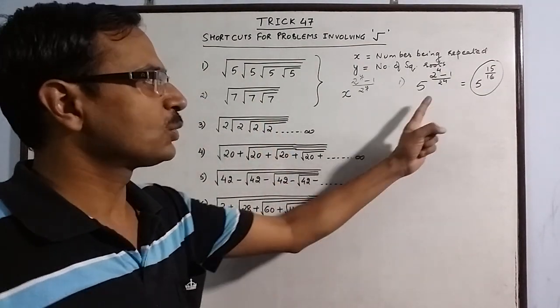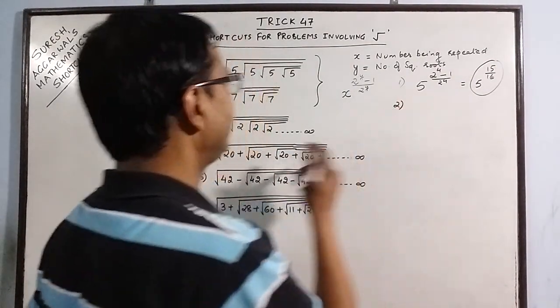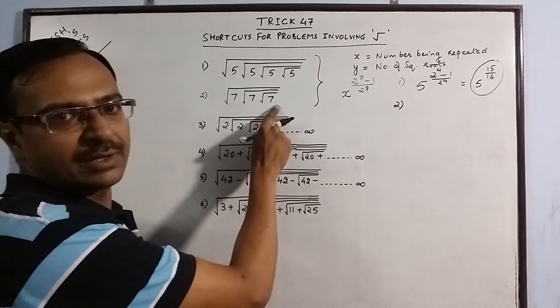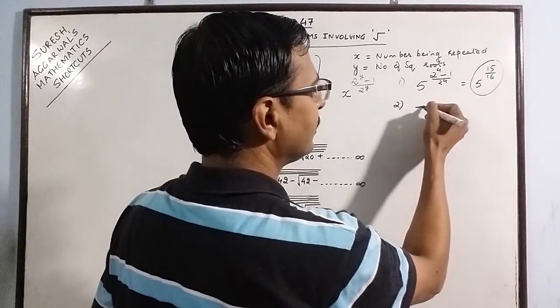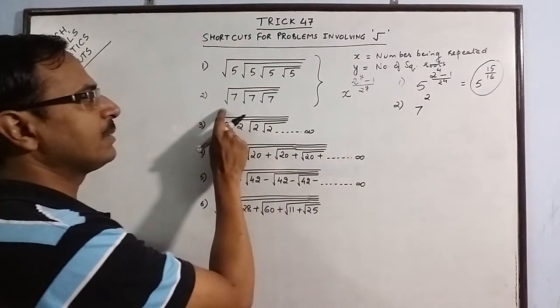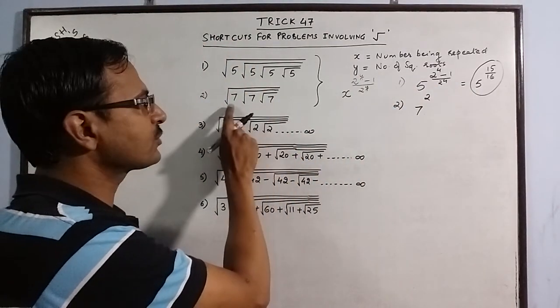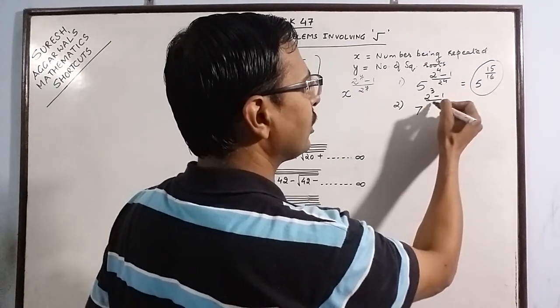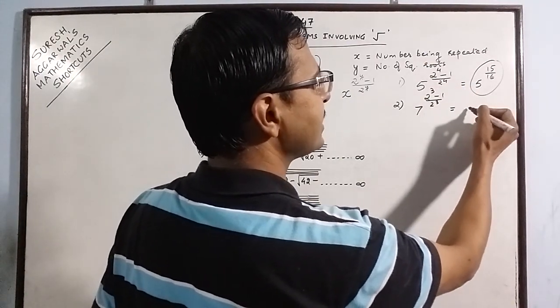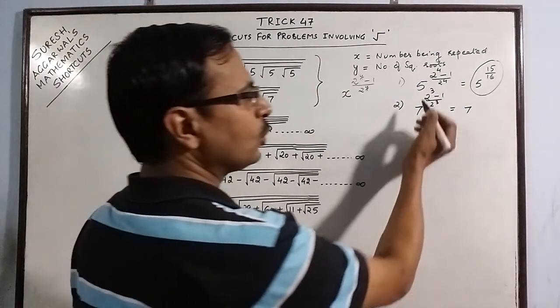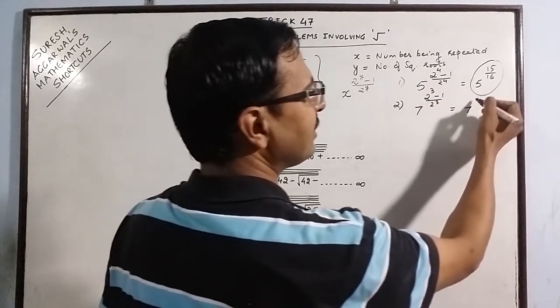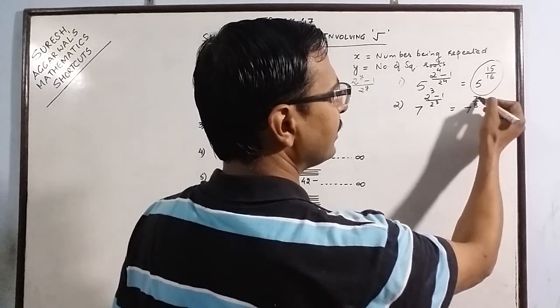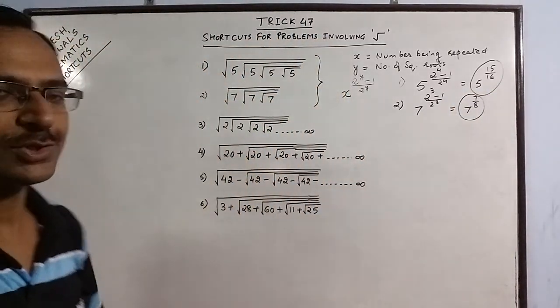Similarly, you can apply this rule for the second problem. Here, the number is 7, so x is 7 and 2 raised to power y. Y means number of square roots, so here the number of square roots is 3. So 2 raised to power 3 minus 1 upon 2 raised to power 3. Your answer is 7 raised to power 2 cube is 8, 8 minus 1 is 7, 7 upon 8. So this is the answer for the second question.